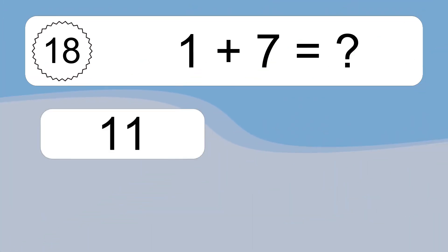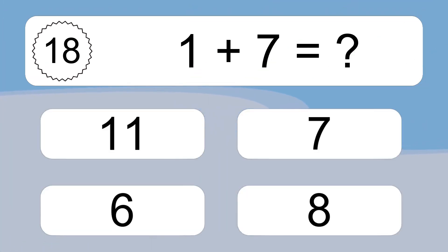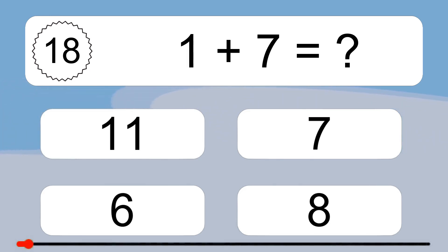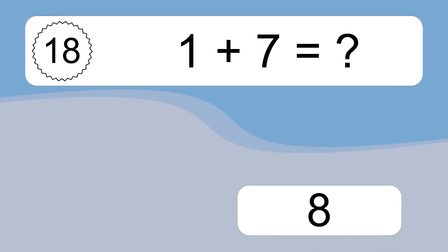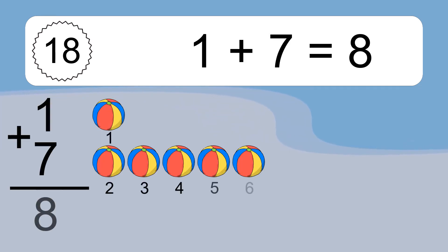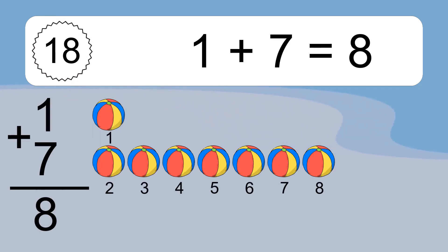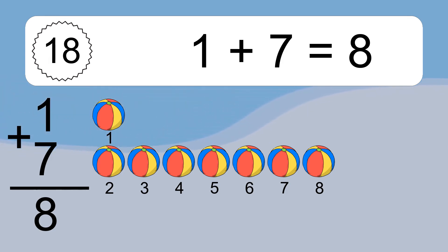1 plus 7 equals what? 1, 2, 3, 4, 5, 6, 7, 8. 1 plus 7 equals 8. Let's count it: 1, 2, 3, 4, 5, 6, 7, 8.